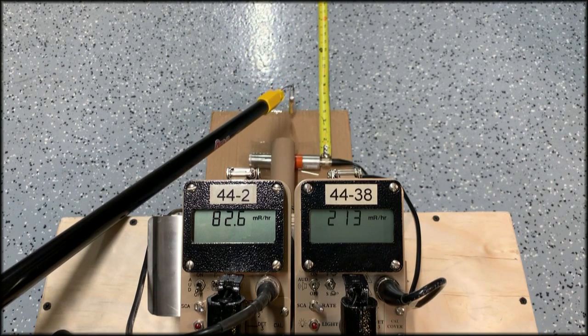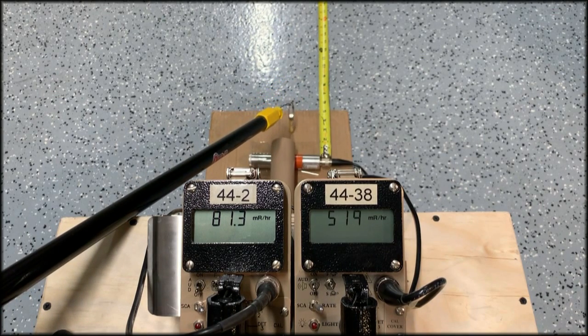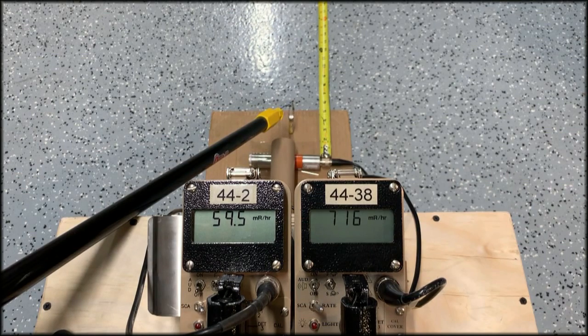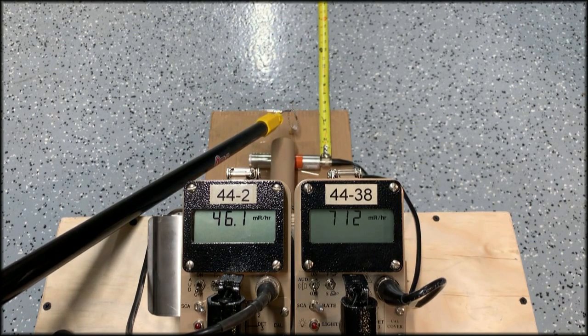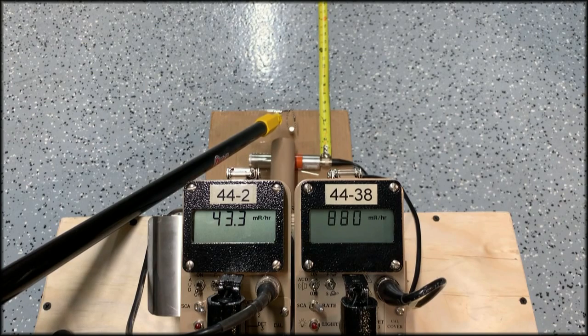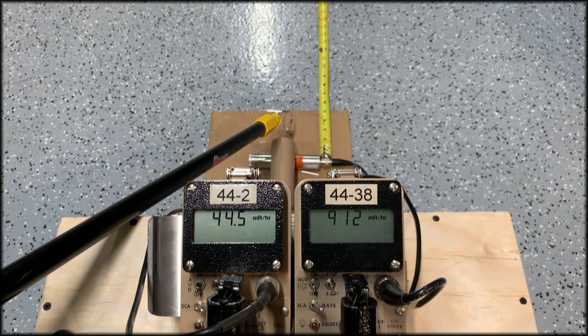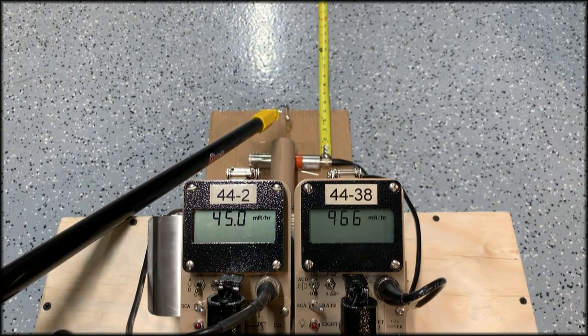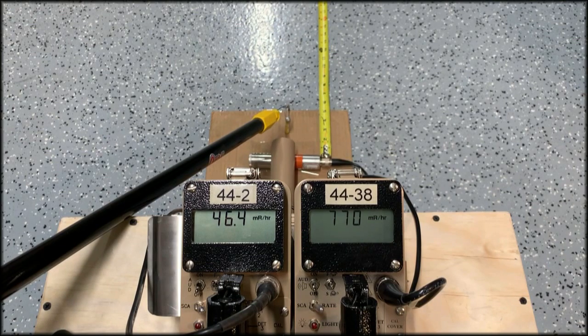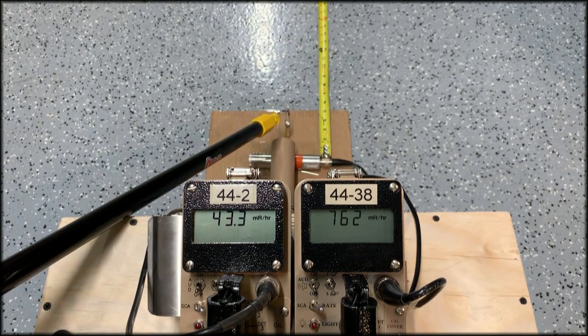And it gets even worse as we start to move in closer. Now we're about three inches away. Our dose rate's going down on the 44-2 around 40 mR per hour. And we're up almost to one R per hour on the model 44-38.